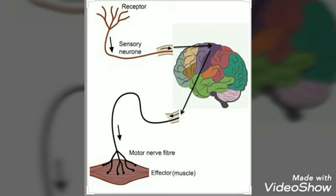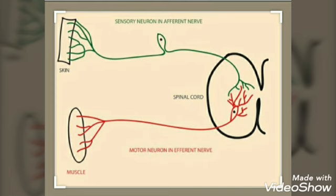The effector organ is the organ where the effect is to be produced, or the organ where the main task is to be performed. There is one more type of nerve: mixed nerves, which consist of both sensory and motor nerve fibers. These nerves are mainly associated with the spinal cord and primarily carry the impulses responsible for reflex actions.